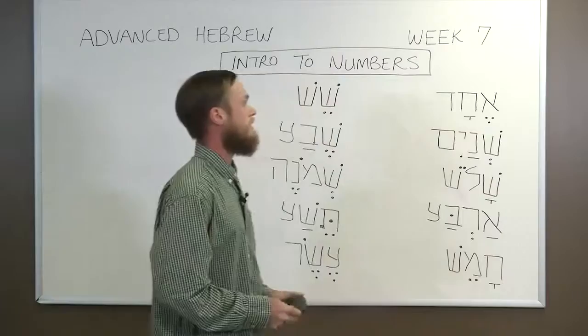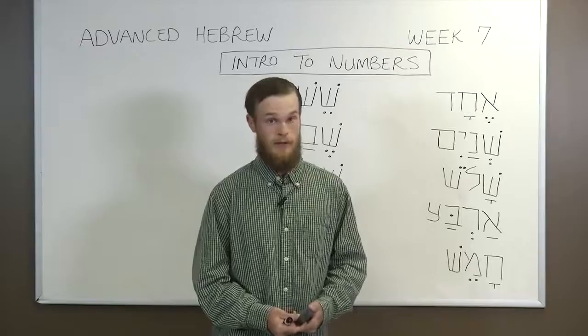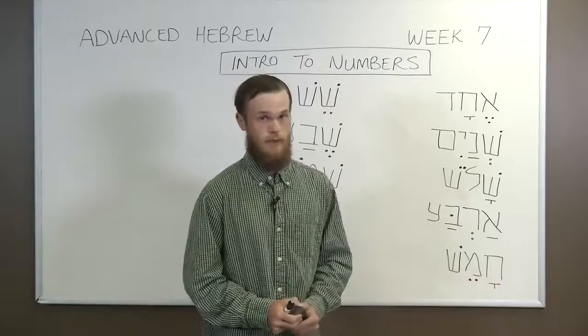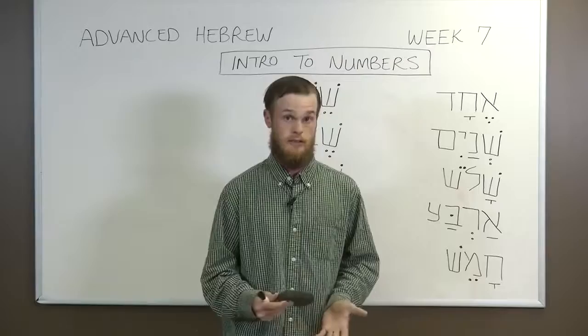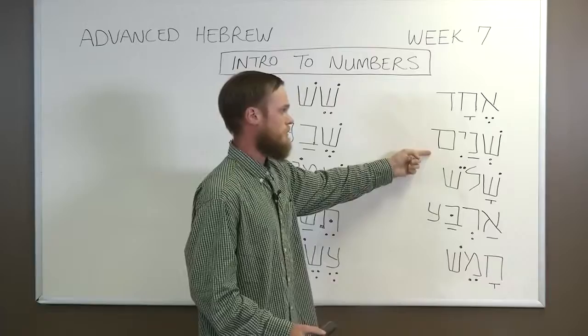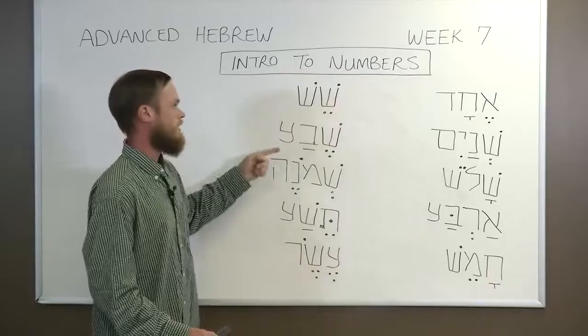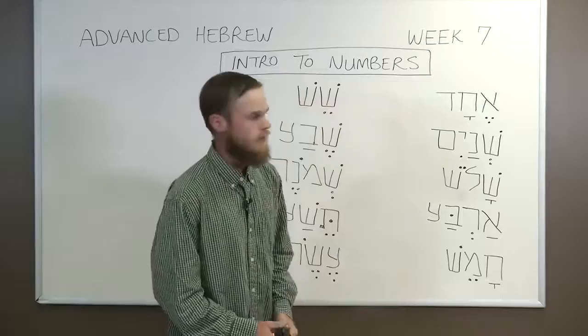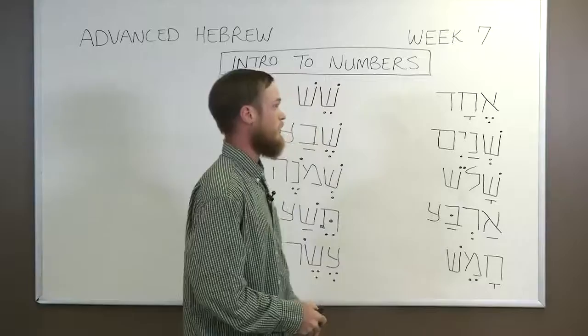Cardinal numbers in Hebrew have two genders — they can be masculine or feminine — and two ways they can function. The first function is numbers functioning as adjectives. In the masculine, counting from one to ten, we have: echad, shenayim, shalosh, arba, chamesh, shesh, sheva, shemoneh, tesha, and eser. That is counting in the masculine, and there are also equivalents in the feminine.